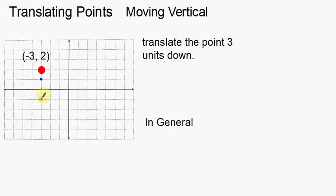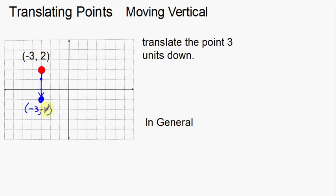So starting here with this point, we're going to move three units down — one, two, three. So we're moving down three units, and there's my new point right there. Now what are the coordinates of this new point? That's a negative three, negative one. So negative three, negative one are the coordinates of my new point. Notice that the x coordinates didn't change, but the y coordinate did change. I made a mistake earlier — it's supposed to be a negative one. So we went from negative three to negative three; the x coordinate didn't change. But the y coordinate went from two to negative one — that looks like it did change.